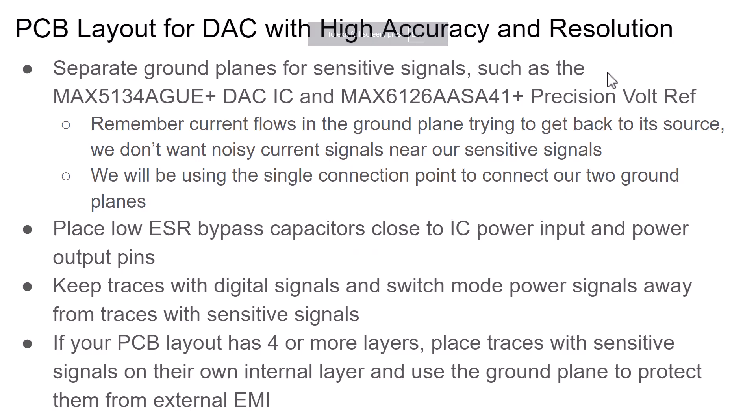Now that we've seen the circuit in action, let's review the key PCB layout considerations. We want a separate ground plane — keep our sensitive signals, mainly the voltage reference and DAC, on their own ground plane so that noise doesn't find its way onto traces, power supplies, or the voltage reference. There are different ways to isolate ground planes; we're using the single-point connection method, meaning the two ground planes are connected at only a single point.